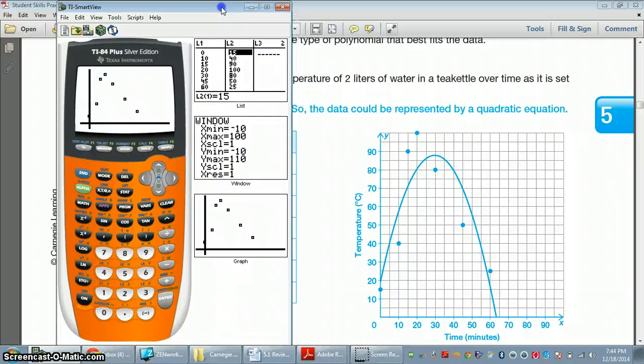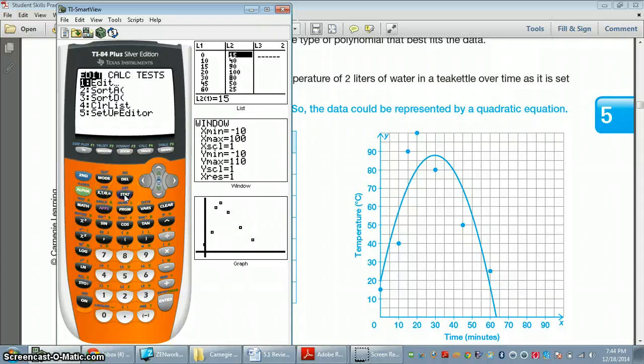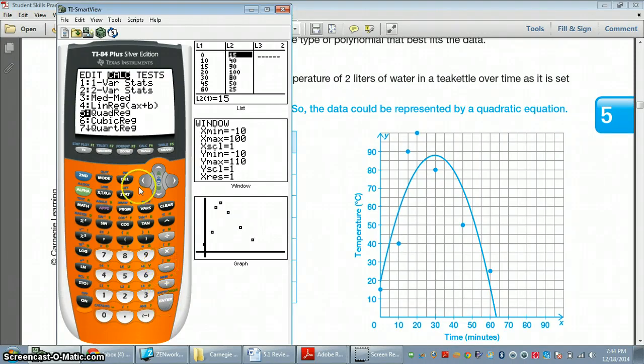The next part of this chapter that we did is we said, okay, we think it looks like a parabola. And we know that parabolas are considered quadratic equations. And so what we did in class is we said, let's hit stat again. Let's arrow over to calc. And we want to go down to number 5 because that's going to allow us to find an equation for a quadratic regression because it says quad.